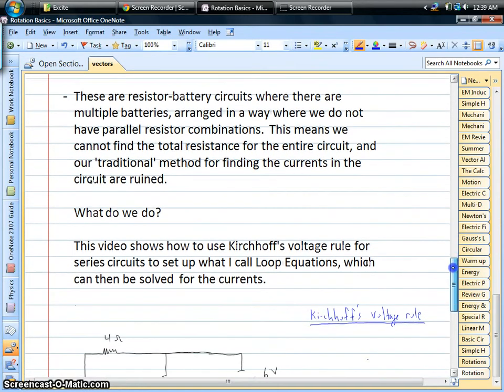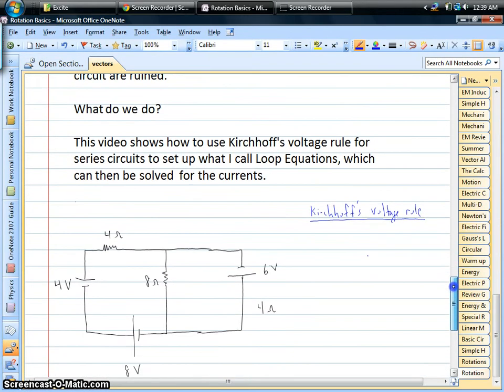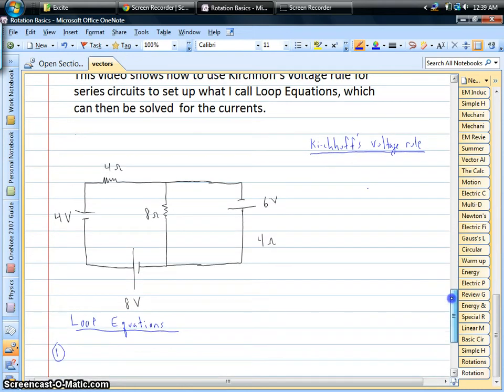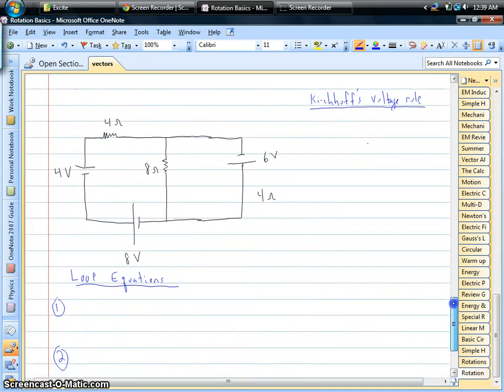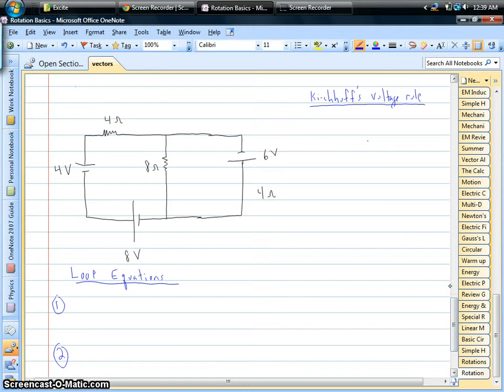A multi-loop circuit is something that looks really weird, where you have multiple batteries arranged in a way where we no longer have nice, neat sets of series and parallel resistors, especially parallel.